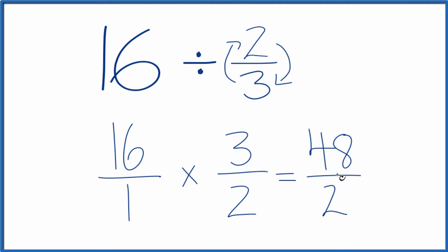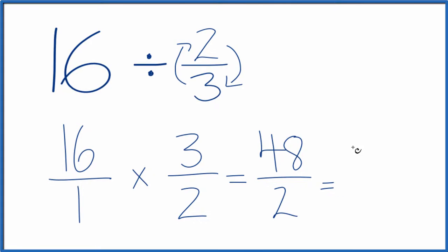We can simplify this, though, because 2 goes into 48. So let's just divide 48 by 2 and 2 by 2. 48 divided by 2 is 24. 2 divided by 2 is 1, and that's just 24.